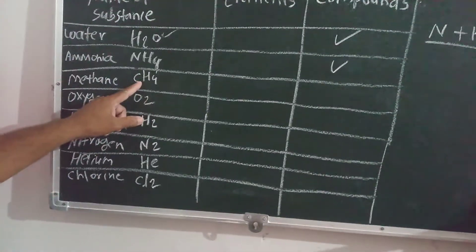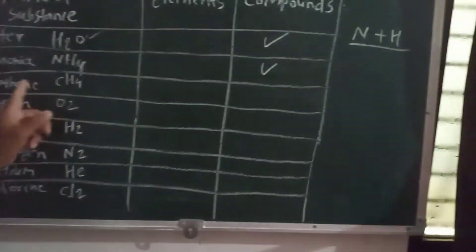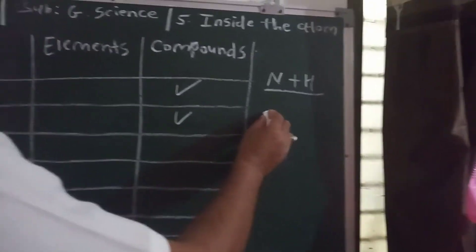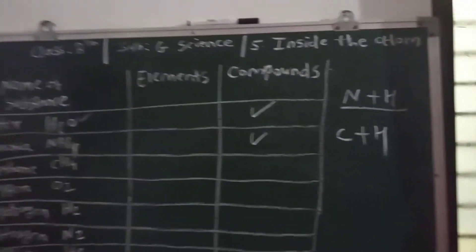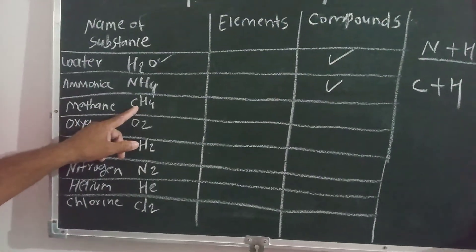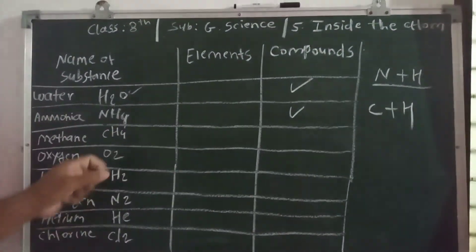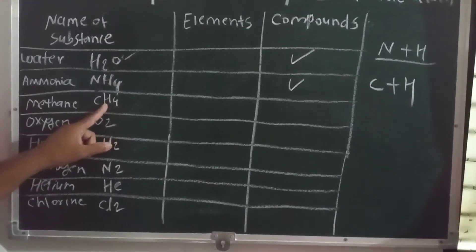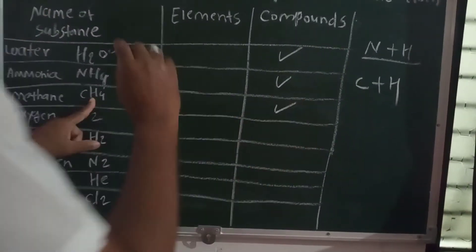The third example is methane. The formula of methane is CH4. Here also, to form methane, two types of molecules are combined — carbon plus hydrogen. Carbon and hydrogen are combined together to form methane. Therefore we will also classify methane as a compound.